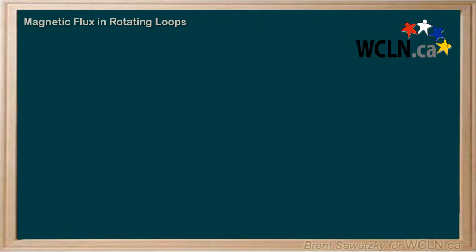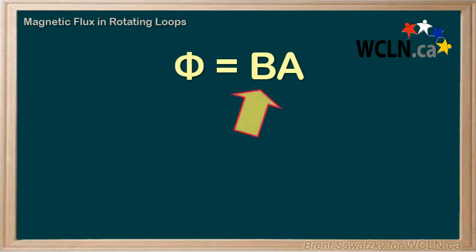We've learned that our equation for magnetic flux is flux equals B times A, where B is our magnetic field strength, and A is the area through which this magnetic field is passing through.